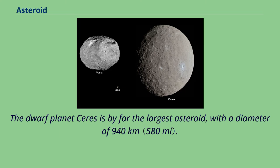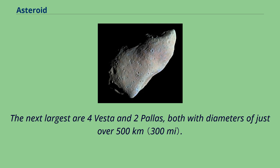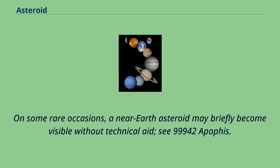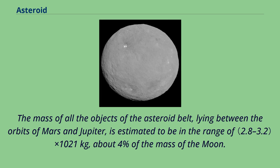The dwarf planet Ceres is by far the largest asteroid, with a diameter of 940 kilometers. The next largest are 4 Vesta and 2 Pallas, both with diameters of just over 500 kilometers. Vesta is the only main belt asteroid that can, on occasion, be visible to the naked eye. On some rare occasions a near-Earth asteroid may briefly become visible without technical aid. The mass of all objects of the asteroid belt is estimated to be about 4% of the mass of the Moon, of which Ceres comprises about a third of the total.